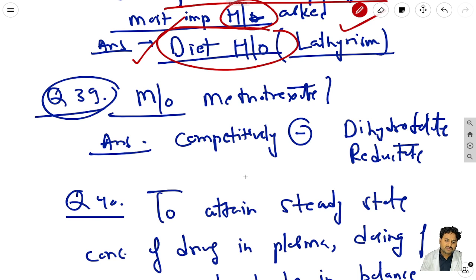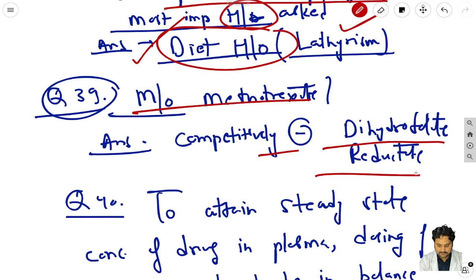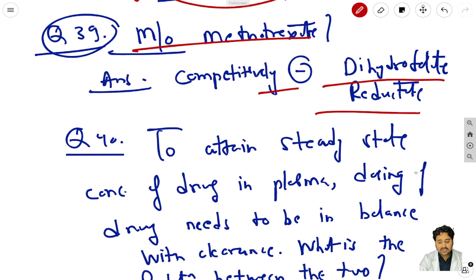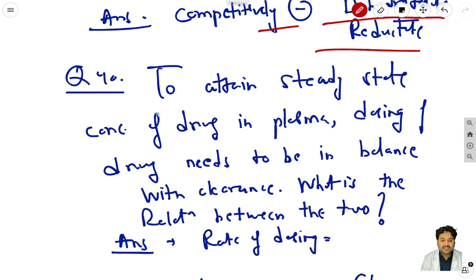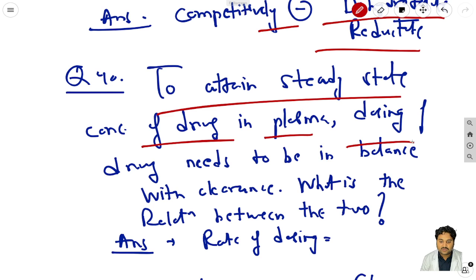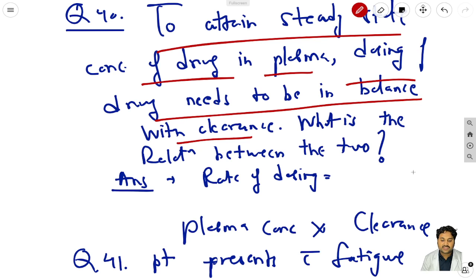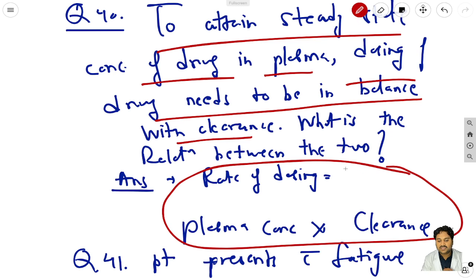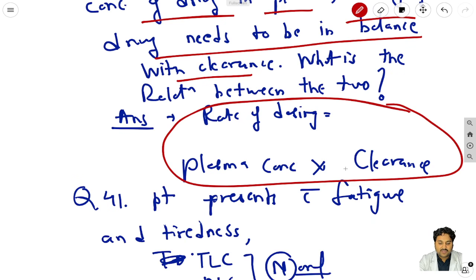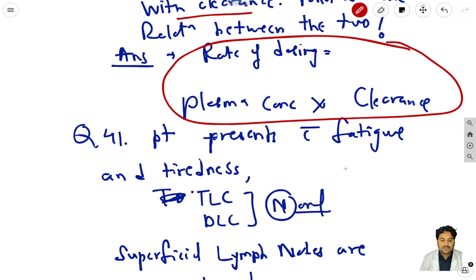Question 39: mechanism of methotrexate - it competitively inhibits dihydrofolate reductase. Question 40: to attain the steady state concentration of a drug in plasma, dosing of the drug needs to be in balance with clearance. The formula: rate of dosing equals plasma concentration multiplied by clearance - a basic pharmacology question.